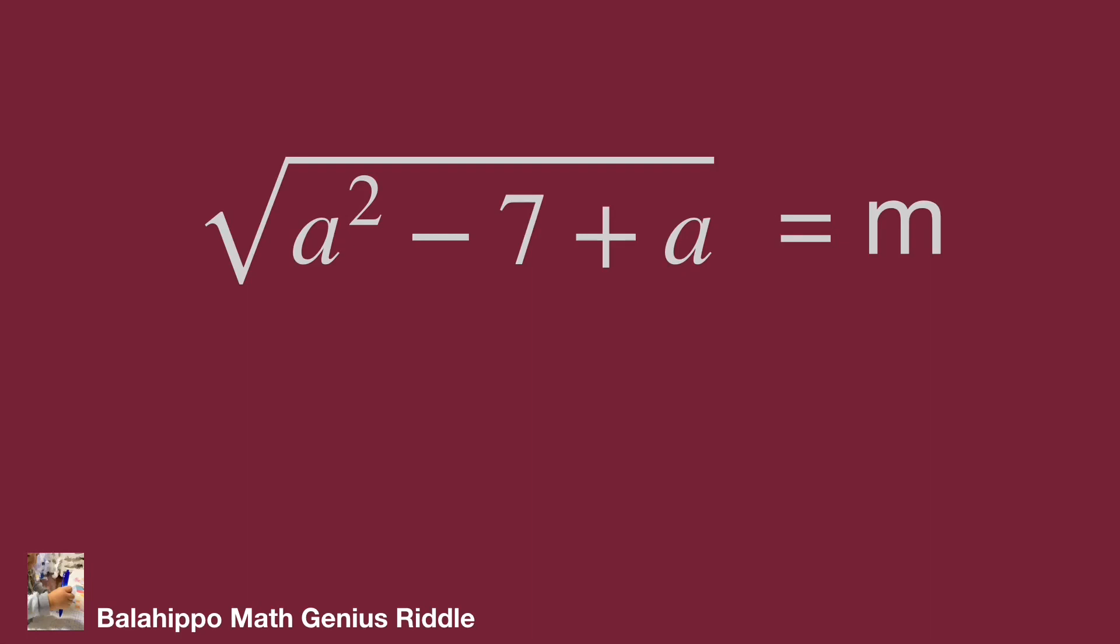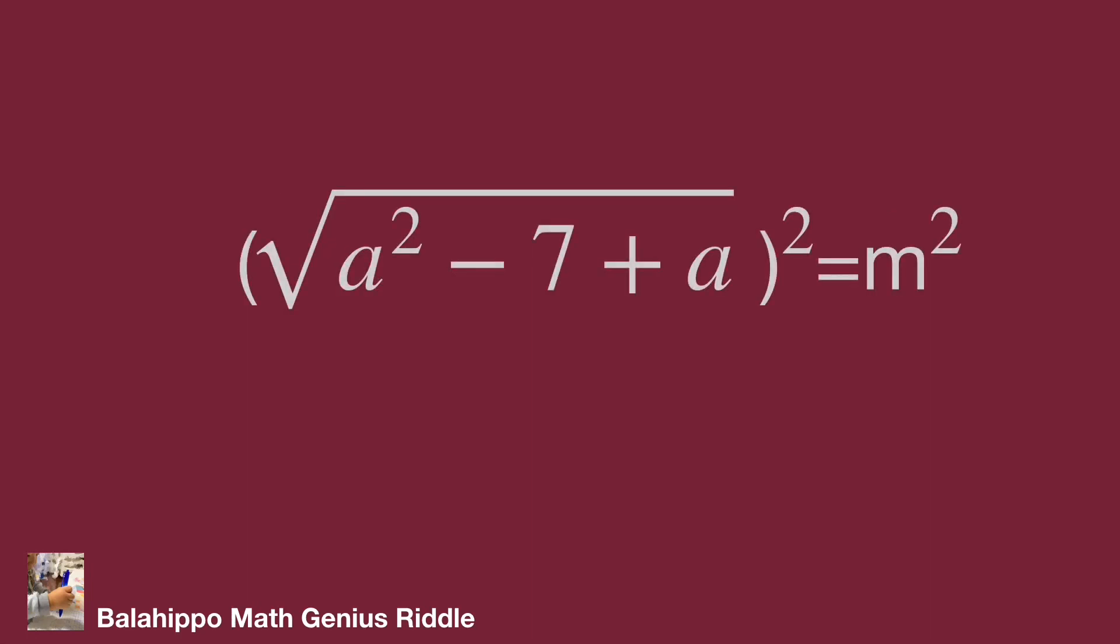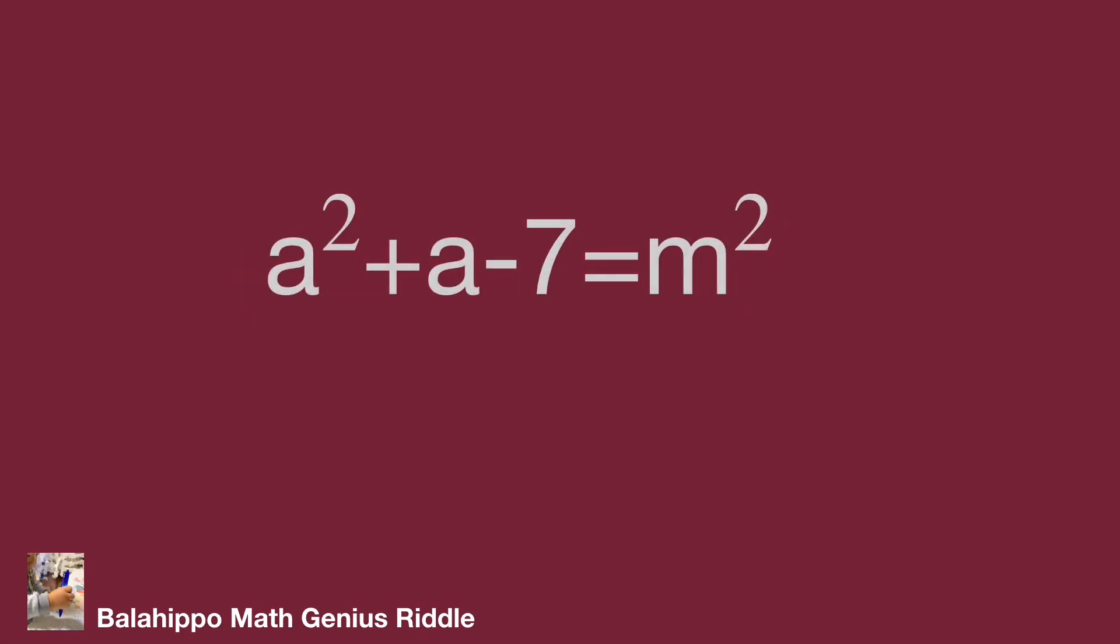Square both sides of this equation. Develop it and adjust the item sequence as a squared plus a minus 7 equals m squared. I am going to generate squares from the items on the left side of the equation. Therefore, multiply 4 to both sides of the equation.